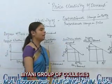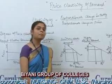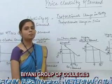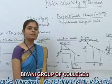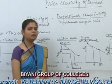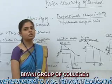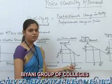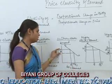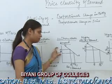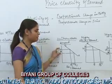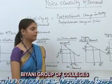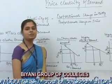Third one is unitary elastic demand. It means the percentage change in quantity demanded is equal to the percentage change in price. For example, a 10% change in quantity demanded equals a 10% change in price. The quantity demanded changes by 10% and the price is also changed by 10%, which is known as unitary elastic demand.